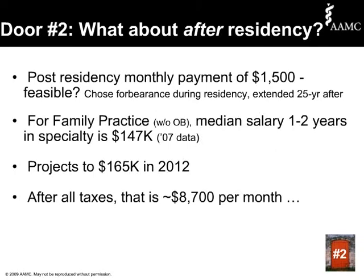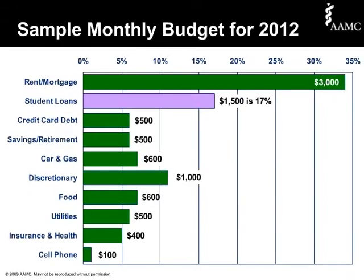Once you take away federal, state, and local and payroll taxes — about 37% — you get roughly $8,700 a month. What does the monthly loan payment look like in that context? Here's a sample monthly budget for the year 2012 for Dr. Median. Each bar shows the percentage of the monthly income on that particular item with the amounts tacked on at the end. You'll see the student loans of $1,500 is about 17% of the budget.